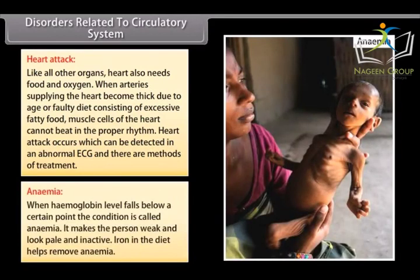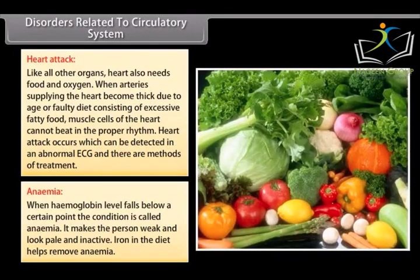Anemia: When hemoglobin level falls below a certain point, the condition is called anemia. It makes the person weak and look pale and inactive. Iron in the diet helps remove anemia.